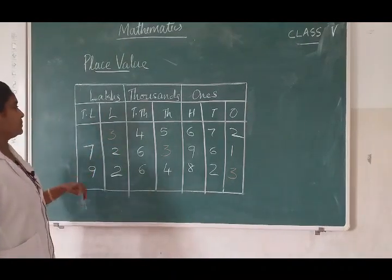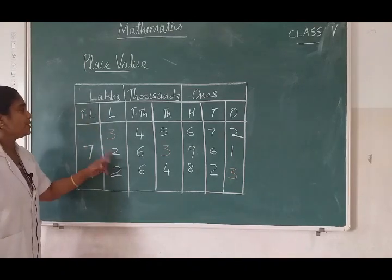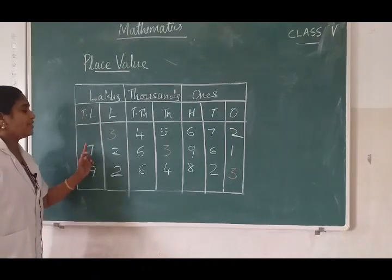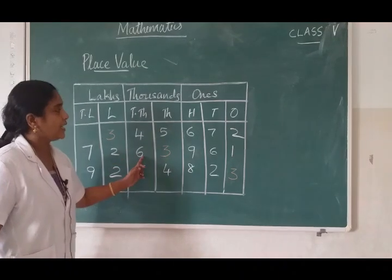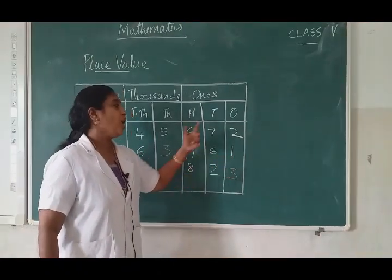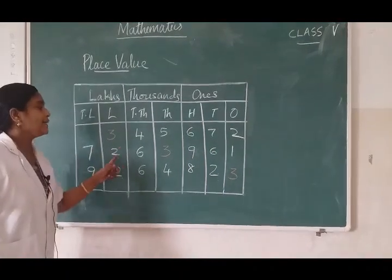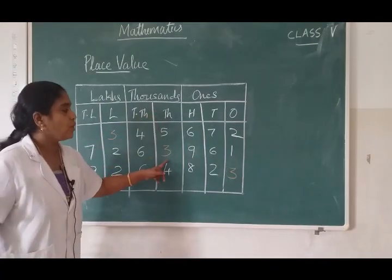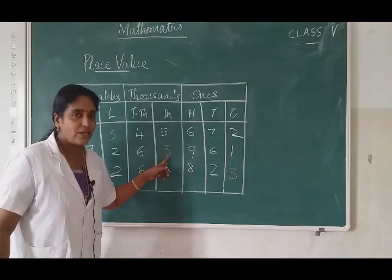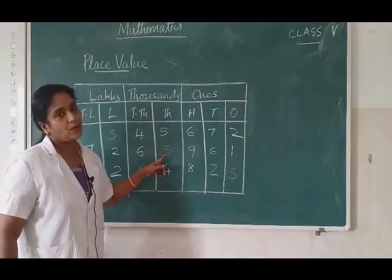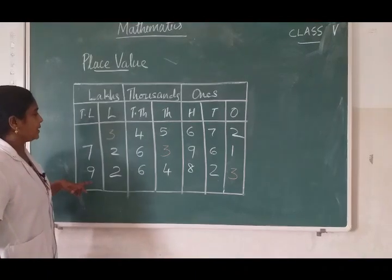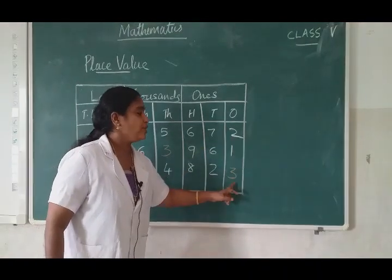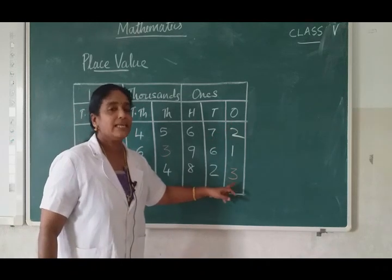Consider the next number: 7 and 2 come under the ten lakhs and lakhs period. So the number is 72 lakhs, 63,961. In this number, 3 comes under the thousands place, so the value of 3 is 3000. Next number: 92 lakhs, 64,823. What is the value of 3 here? 3 ones — that means 3 itself.